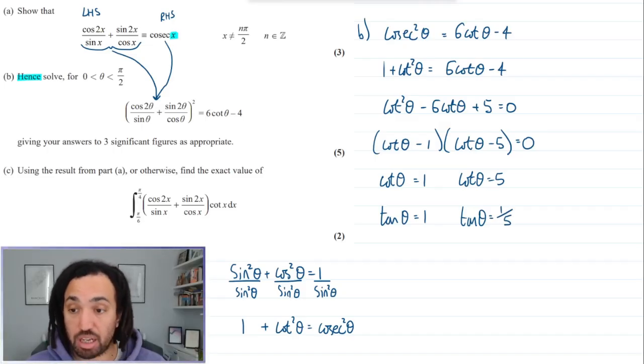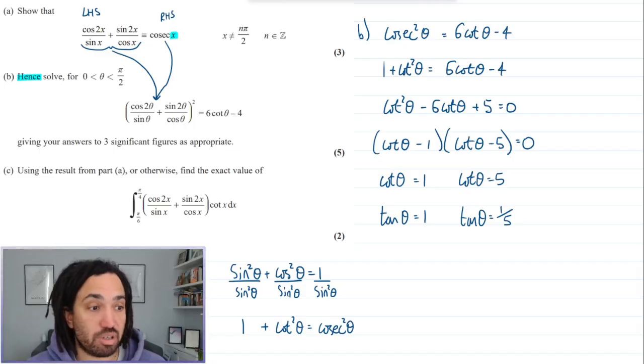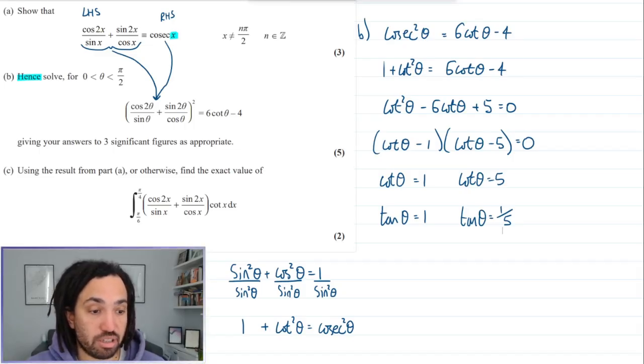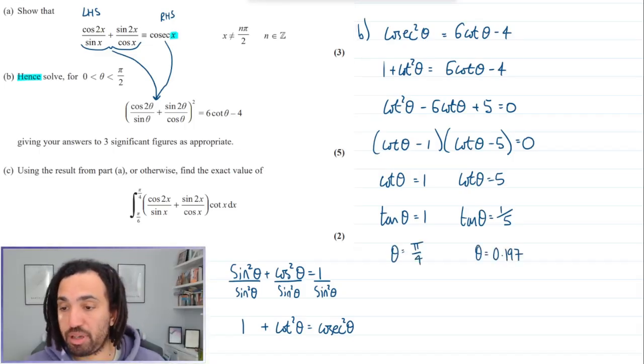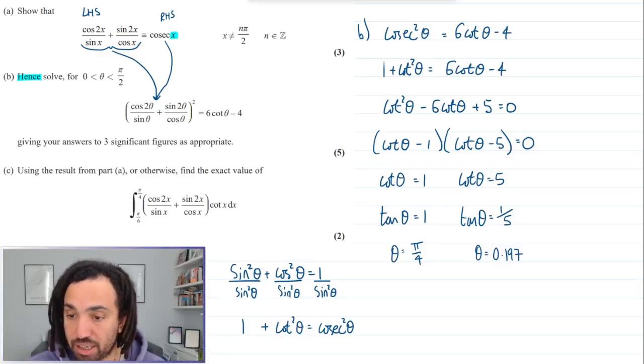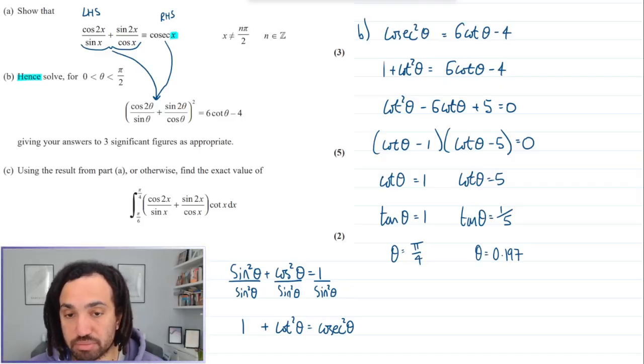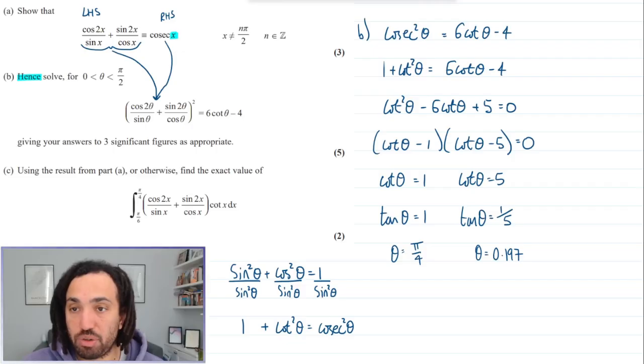Now we have to go to our calculator to do these. I've just done inverse tan on my calculator and of course 1 gives you pi over 4, and a fifth will give you 0.197.